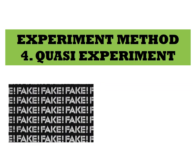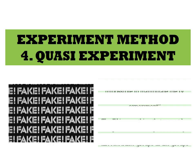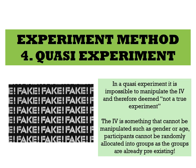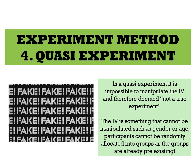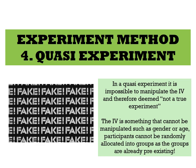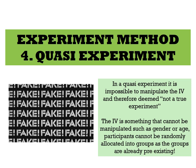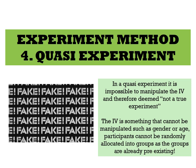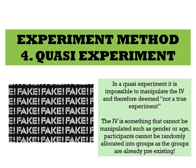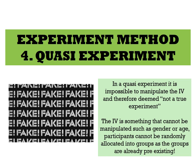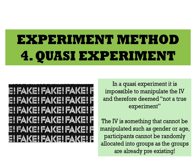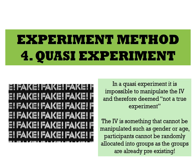The last experimental method is a quasi-experiment. In a quasi-experiment, it is impossible to manipulate the independent variable. In a natural experiment it's unethical, but in a quasi-experiment it's actually impossible. Therefore, some people say this isn't even a true experiment, because to be a true experiment you need to be able to manipulate the independent variable. The IV in a quasi-experiment is something like gender or age — participants cannot be randomly allocated into these pre-existing groups.